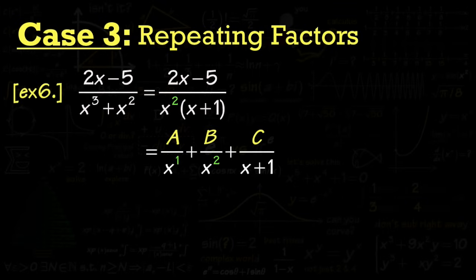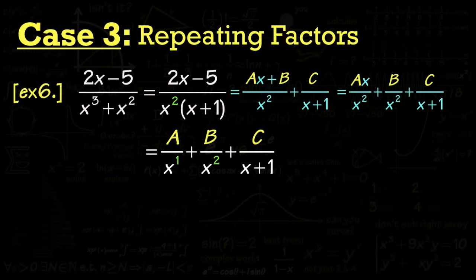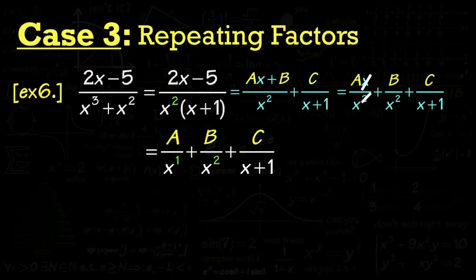If instead you break it into just two fractions — one with x squared on the bottom and one with x plus 1 — you'd need a linear Ax plus B on top of the first. But then you can split that fraction and cancel the x, ending up with the same A over x term anyway. So why go through the extra steps? Just build up the powers from the start and keep the tops the same kind.